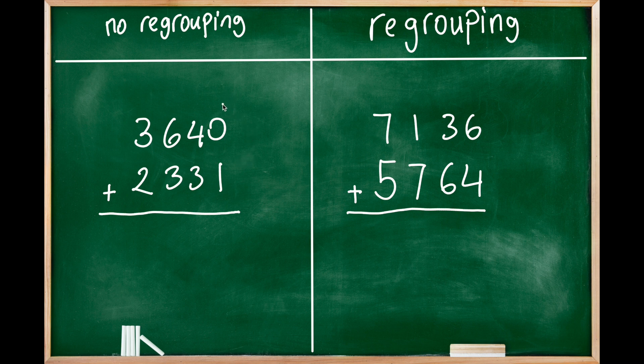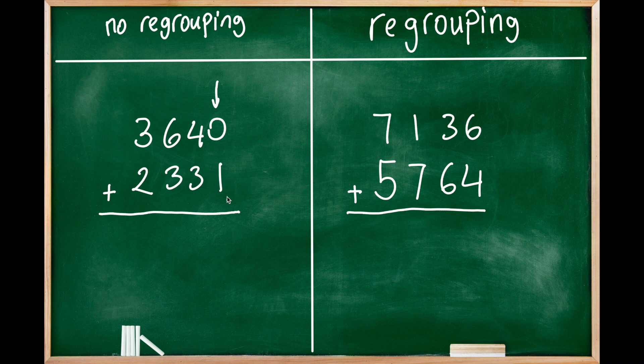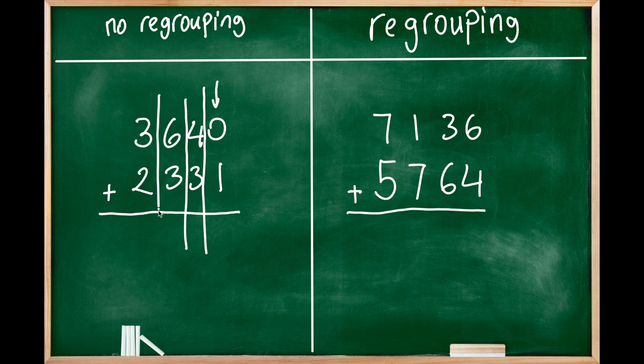This addition problem is going to be solved with standard algorithm. In standard algorithm we start with ones place and we can divide up into place values so we can see the alignments. Zero plus one is one.